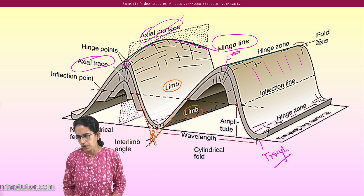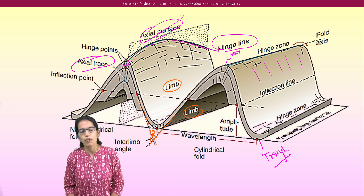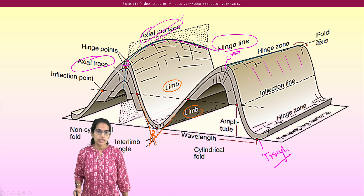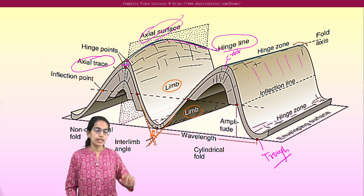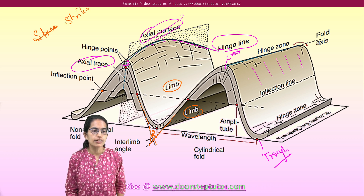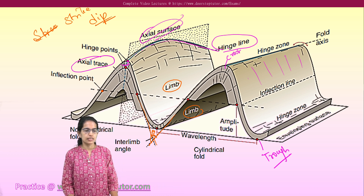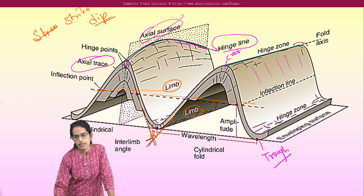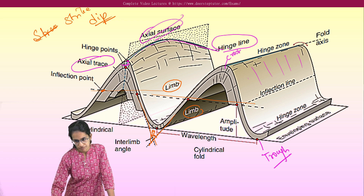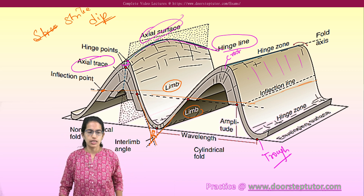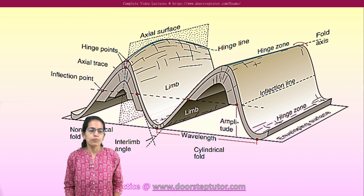There is also the inflection point, which is the point where the dip changes — there is a change in the attitude of the bed. We already understand attitude through strike and dip. When the dip changes, that is the inflection point. The line passing through the inflection point in 3D is called the inflection line.